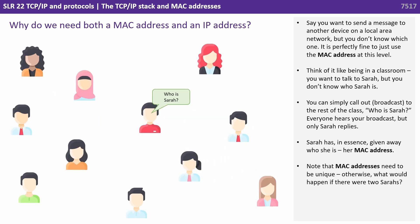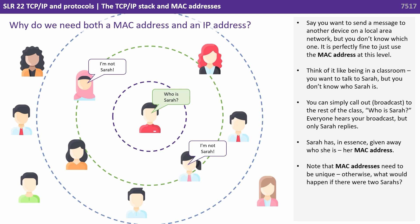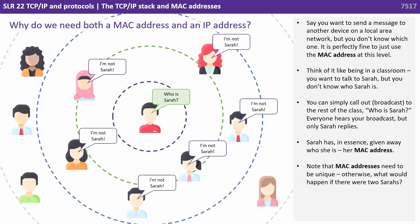Say you want to send a message to another device on a local area network but you don't know which one — it's fine to just use the MAC address. Think of it like being in a classroom: you want to talk to Sarah but don't know who she is, so you broadcast to the rest of the class, 'Who is Sarah?' Everyone hears your broadcast but only Sarah replies, giving away who she is — her MAC address. Note that MAC addresses need to be unique; otherwise, what would happen if there were two Sarahs?